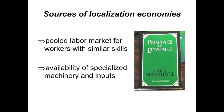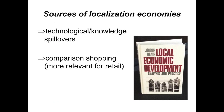A second localization economy noted by Marshall is the availability of specialized machinery and inputs. This is especially true for inputs that are either so expensive or so infrequently used that they are shared between companies. This also covers things like specialized services such as legal or financial services that are specific to an industry. The third of Marshall's big three localization economies is a flow of information and knowledge between companies, often referred to as a knowledge spillover.